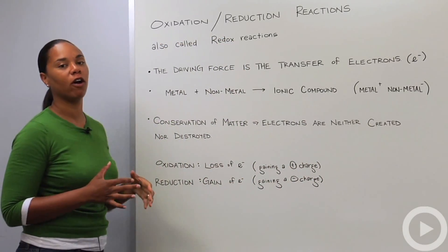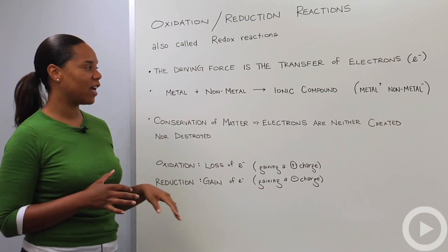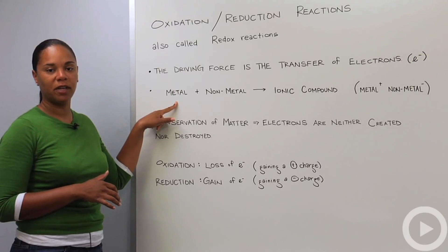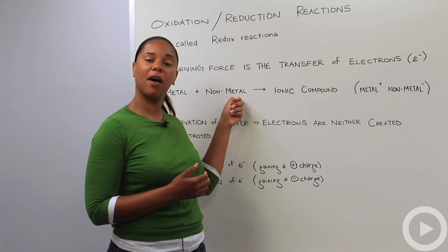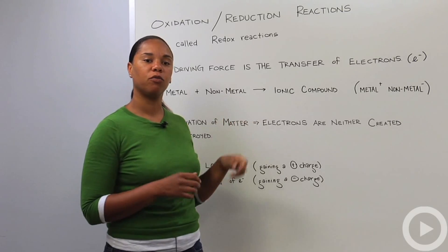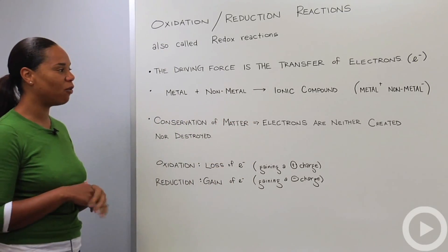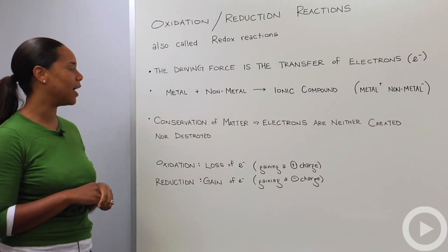So you'll recall from your knowledge of the periodic table that metals, group 1 and group 2 elements, usually become cations, and nonmetals from the right side of the periodic table become negatively charged ions.